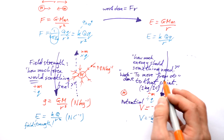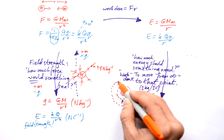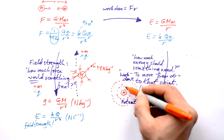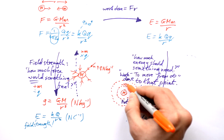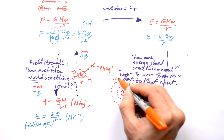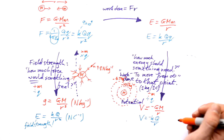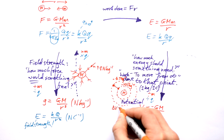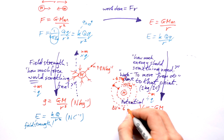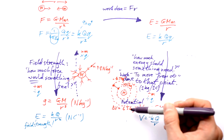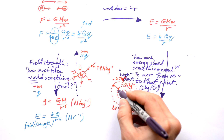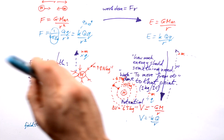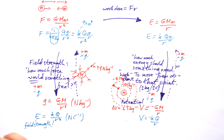The important thing about potential is the change in potential — the change in energy per kilogram or per coulomb to move something from one distance to another. We can draw equipotentials: lines that show the same potential. Say this line represents minus 10 joules per kilogram and this line represents minus 4 joules per kilogram. The change in potential is 6 joules per kilogram. If we know that, we can multiply by the number of kilograms the mass actually is to find out how much energy is needed. To get from potential back to actual potential energy, just multiply by the mass or the charge.